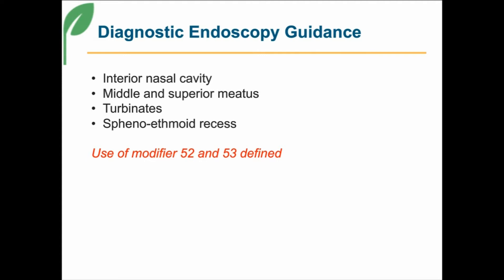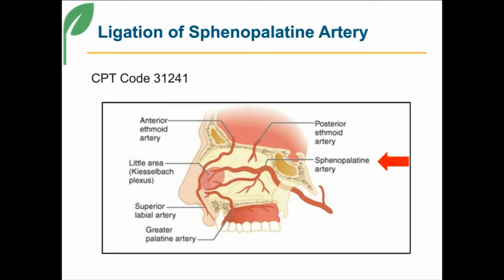That's just the beginning of the focus on the nasal endoscopy codes. We have a new code — ligation of the sphenopalatine artery, code 31241. You can see where that artery is in the image. It's for controlling severe epistaxis, specifically a posterior type of epistaxis as noted in the documentation. Be cautious, because there is another code in this family for control of hemorrhage, and a note tells us not to report that code with 31241, as they expect 31241 to cover the nasal hemorrhaging.